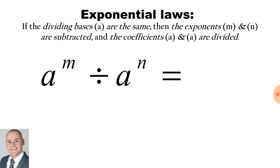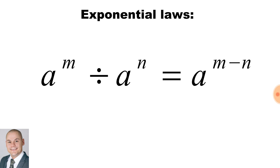If the dividing bases a are the same, then the exponents m and n are subtracted and the coefficients are divided. Therefore we would have the base a to the exponent of m minus n.